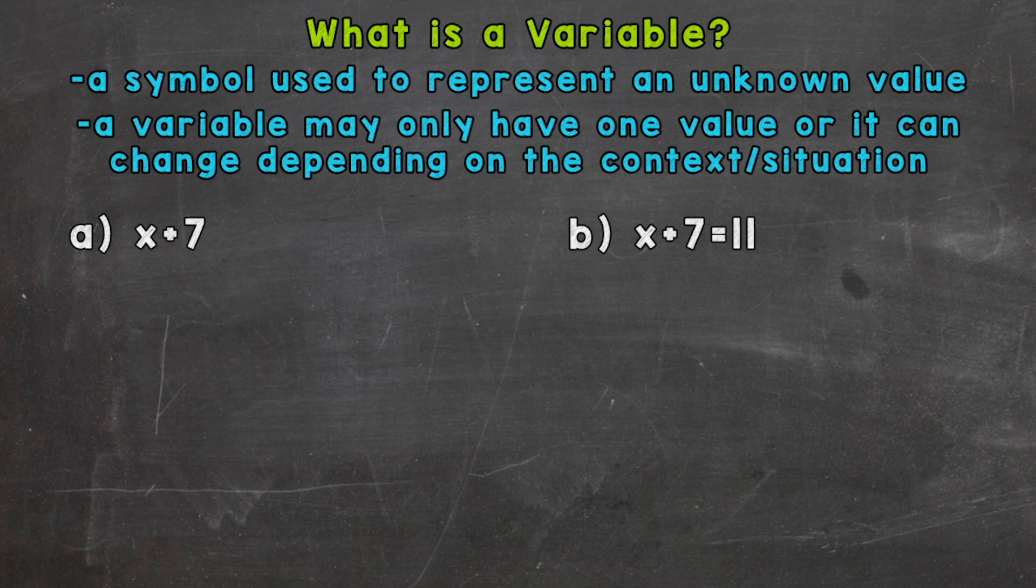You can think of a variable like a missing puzzle piece within a math problem. Now, a variable may only have one value, or it can change depending on the context or situation. We'll go through a couple of examples in order to make better sense of that. We'll go through one example where the value of the variable can change, and one example where the value of the variable will be defined.